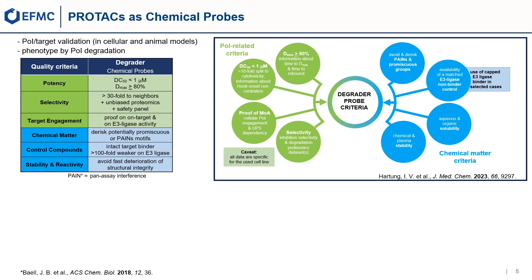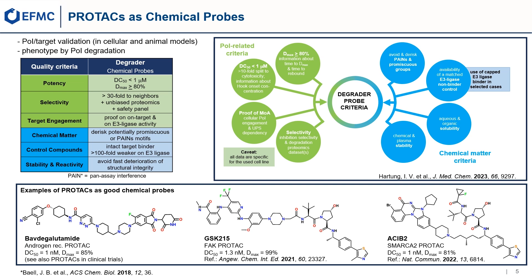The wide area of PROTAC selectivity can start with assays to determine selectivity towards close family members or off-targets, and end with scattering a huge dataset of cellular protein levels by proteomic methods. A caveat is that the obtained data are specific for the used cell line; thus a range of different cell lines should be used. Other chemical criteria common to drug discovery include checking for chemical and plasma stability, avoiding promiscuous compounds or pan-assay-interferent compounds, and measuring aqueous solubility important for in vivo work. Three examples of good chemical probes fulfilling these criteria are shown, and PROTACs in clinical trials are also considered valuable probes for their protein of interest.